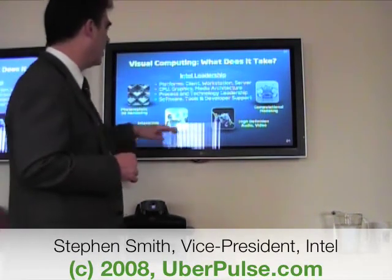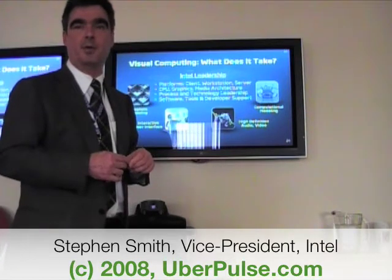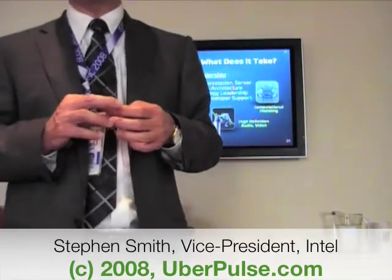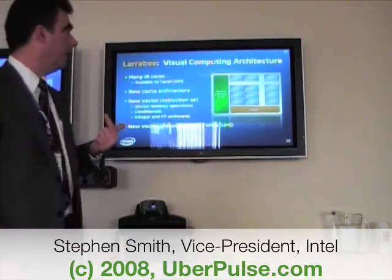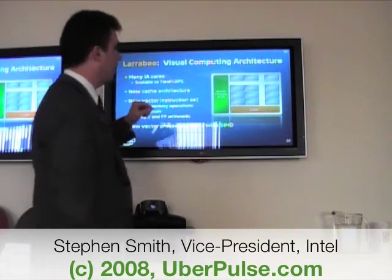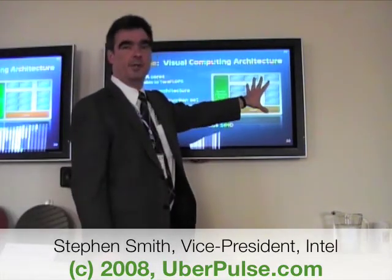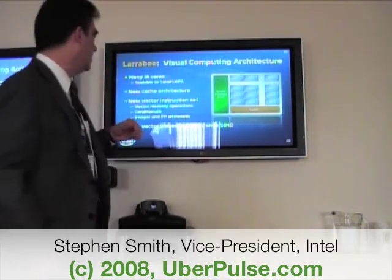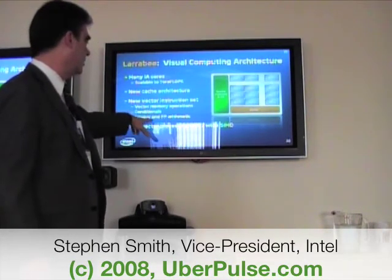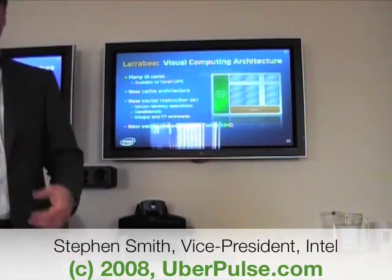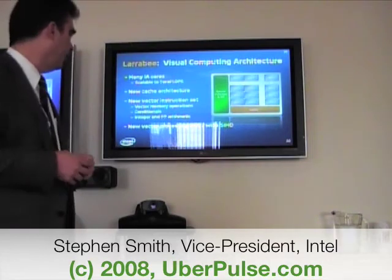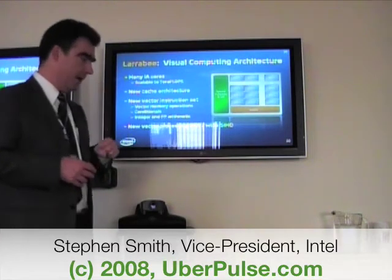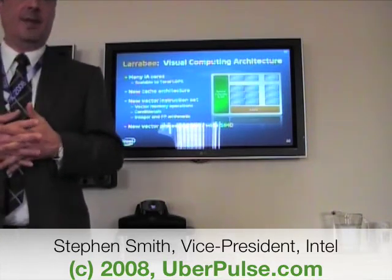Last but not least, all this won't come about unless we provide the software developers in the world — probably a million-plus people who know how to program on x86 — with the tools they need to make this next-generation stuff happen. The specific product approach we're talking about is Larrabee. Larrabee is our first array of small cores product offering — think of x86 IA cores with an instruction set extended to include vector operations: vector memory, conditionals, integer and FP arithmetic, all the stuff you need for 3D computing, supported by a vector processing unit and a wide SIMD engine.